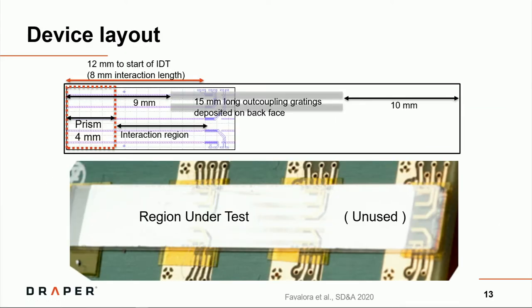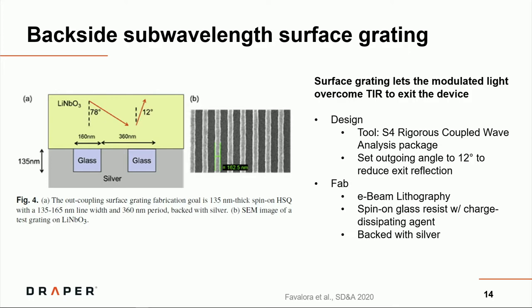This is a photograph of the device. It sort of looks like a matchstick, if you see it in person. On the top half of this slide are snippets of the mask design, in which you can see several IDT electrodes. We've indicated where the optical waveguides are and also where the in-coupling prism would live. Light interacts up here. It dips down into the substrate and beyond the plane of the display, hits some out-coupling gratings in the back, and then pops out again towards you in the audience. The backside subway waveguiding is something we know how to make now. We designed it in an available software tool called the S4 rigorous coupled wave analysis package. It was fabbed in e-beam lithography, and it has a period, ideally, of roughly 360 nanometers. We used spin-on glass resist backed with silver.